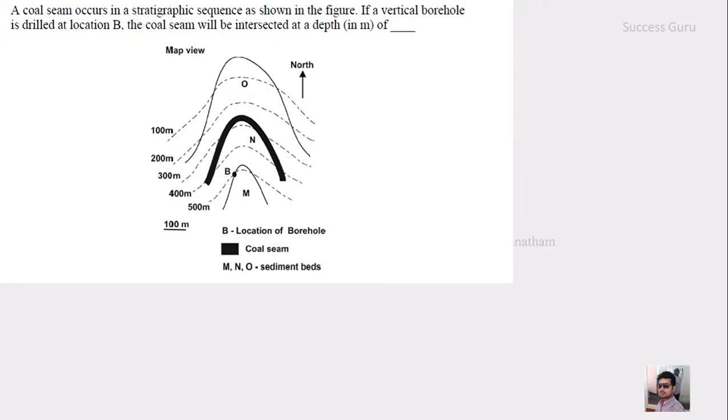And the next question they had given a map in which they had given a borehole point and they are going to drill a hole in that point. And we have to find out at what depth the coal seam will appear. So when there is a map, you have to solve it by drawing the strike. And you know what is a strike? A strike is elevation of inclined formation from the mean sea level. And the contour is the elevation of the surface from the mean sea level, right?